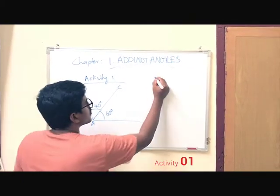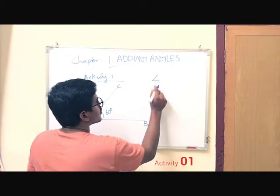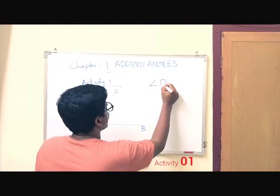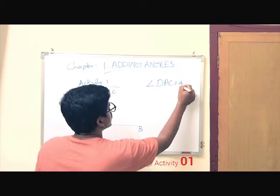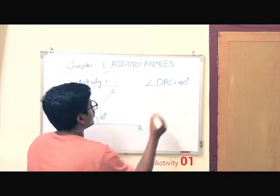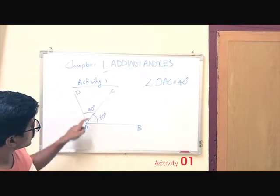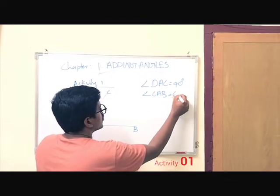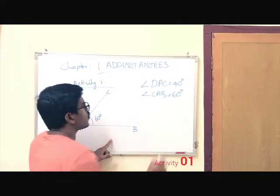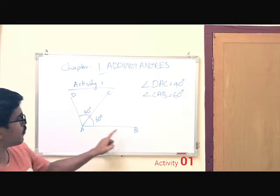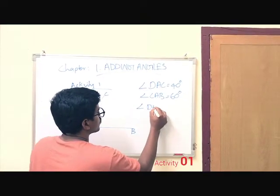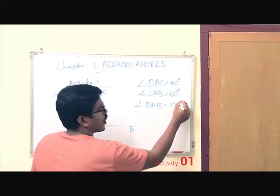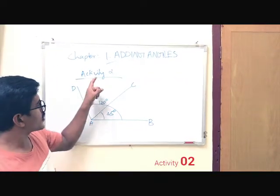We know that angle D, A, C is equal to 40 degrees, and another angle we can see here, angle C, A, V, that is equal to 60 degrees. One more angle is angle D, A, V, which is equal to 40 plus 60, that is 100 degrees. Now we can move on to the next activity.